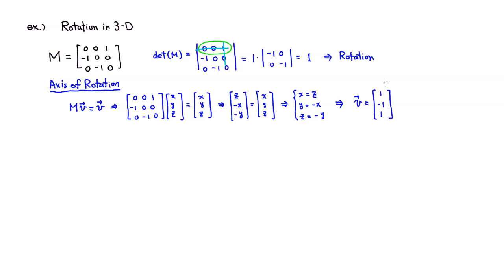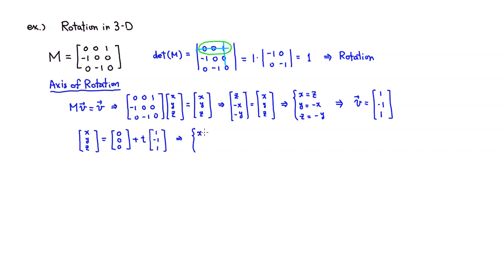If you want the parametric equation for the axis of rotation, you have [x, y, z] = [0, 0, 0] plus any multiple t of the direction vector [1, -1, 1]. So parametrically: x = t, y = -t, z = t. That's the equation for the axis of rotation. Now we've found the axis.